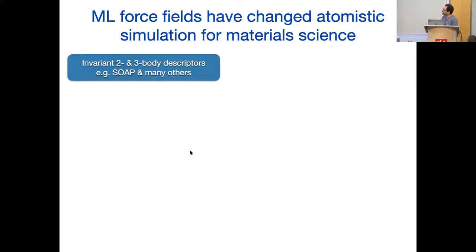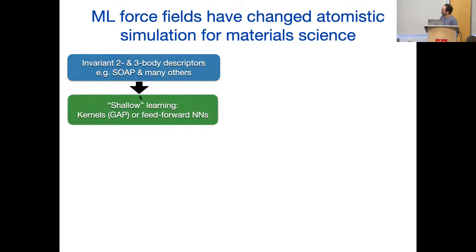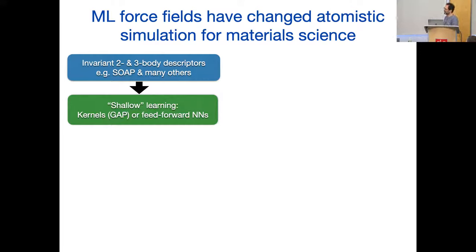We take these descriptors — and we've since understood much more about them than when we started. I'm going to tell you about a particular one: the Smooth Overlap of Atomic Positions (SOAP). It's easy to understand, and there are many others that essentially do the same thing. Then we do shallow learning — not deep learning with many layers — but two layers of a neural network or a Gaussian process, which are actually equivalent in some limit.